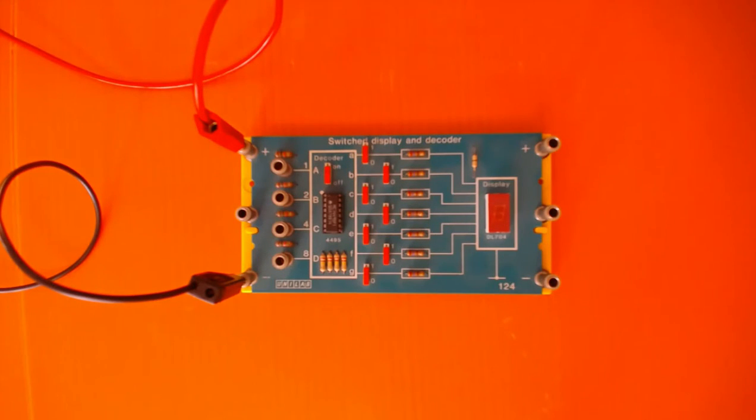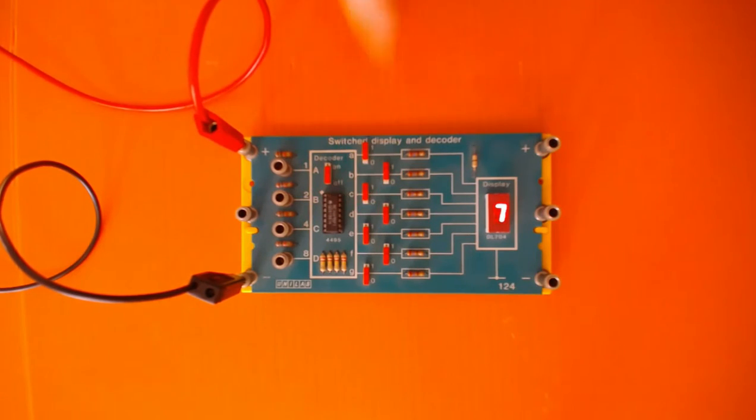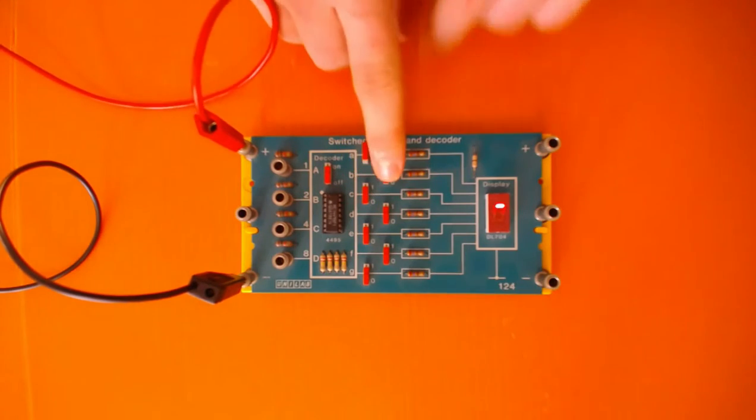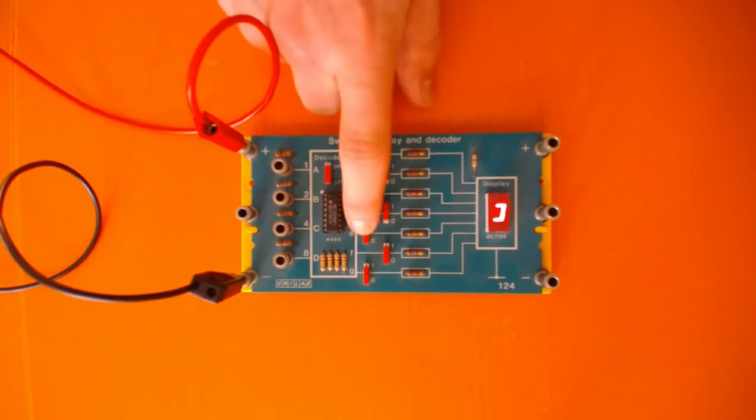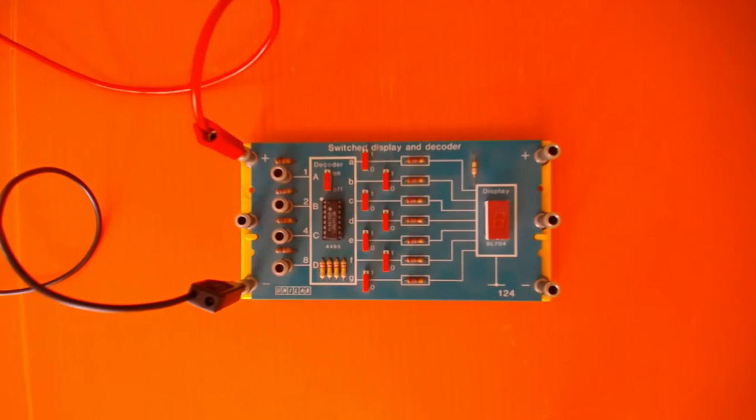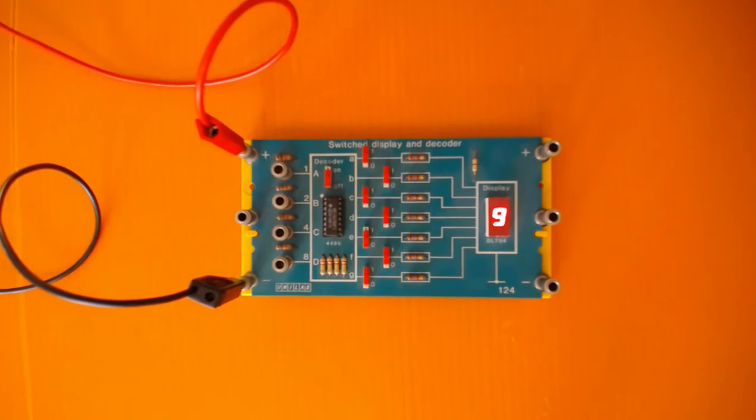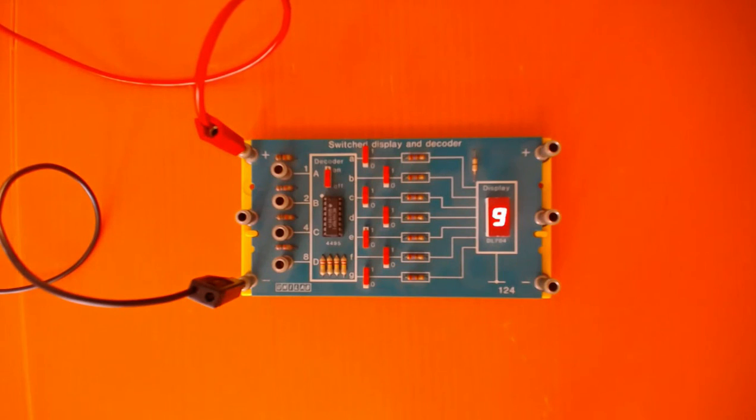For number 7 we switch on A, B, C, D, F and G. So all of them except E.